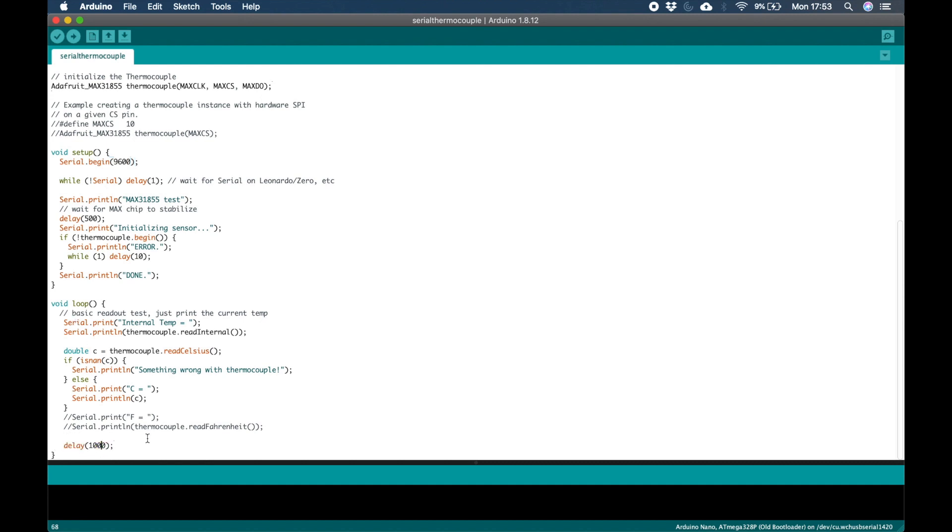In this loop the internal temperature of the thermocouple is read using the read internal function. The Celsius value is also read using the read Celsius function. If there is an error with the thermocouple a message will be printed in the serial monitor. There is also an option within the script to print the temperature in Fahrenheit.